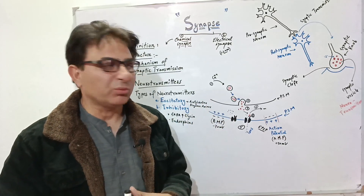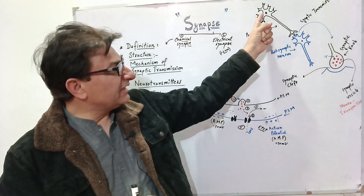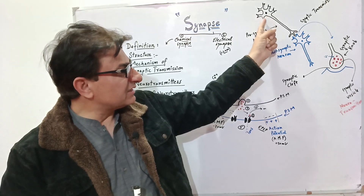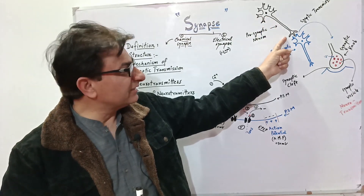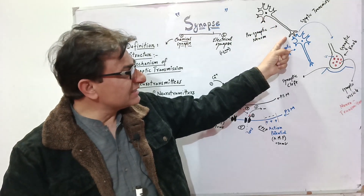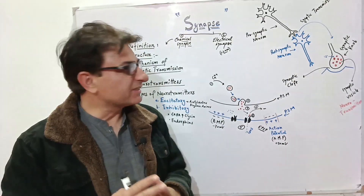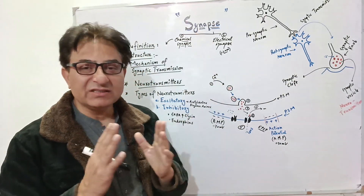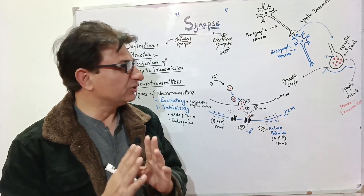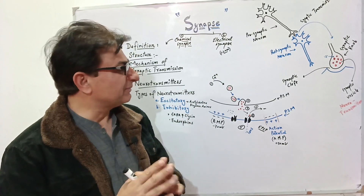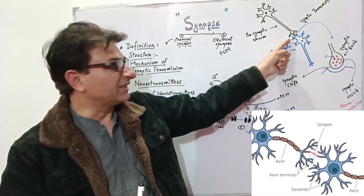Once the information travels from the start of a neuron to its end, at the axon terminal, it needs to transfer to the next neuron. For this purpose, there is a synapse, which is a junction between two consecutive neurons.